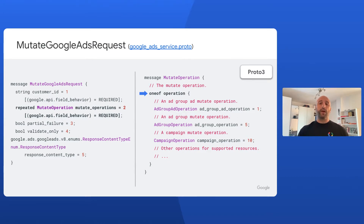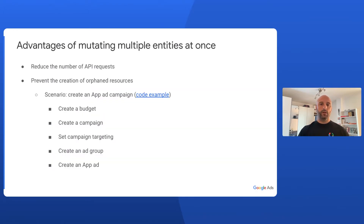This means that with a single API operation, you can mutate several different entities, like Campaigns, AdGroups, Ads, Assets, and all sorts of other entities. This has two main advantages. First, it helps you reduce the number of API calls by grouping together several mutation requests. But it also has a very practical use case that is exactly what I mentioned at the beginning.